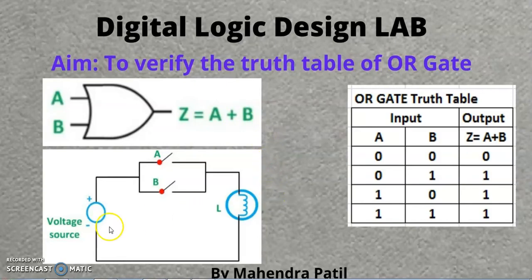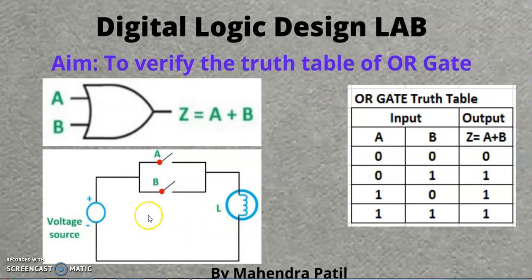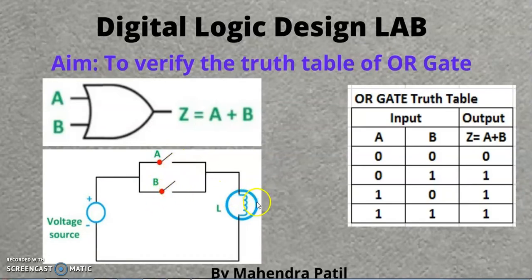In OR gate, there are two inputs A and B, and the output is Z equal to A plus B. OR gate is also considered as the parallel circuit of two switches. Consider this diagram where we have two switches in parallel. We have a voltage source, two switches A and B, and a lamp. This is the input and this is the output — we will take the output at the lamp.